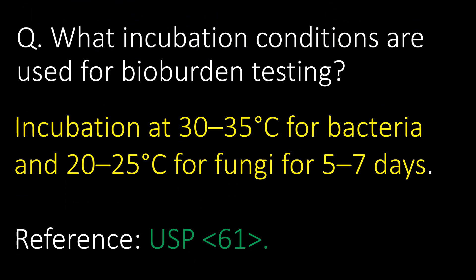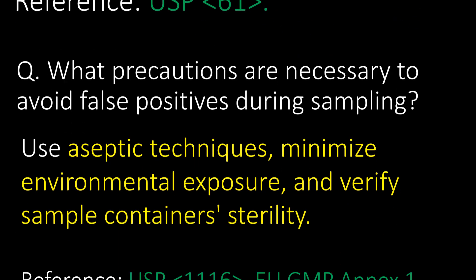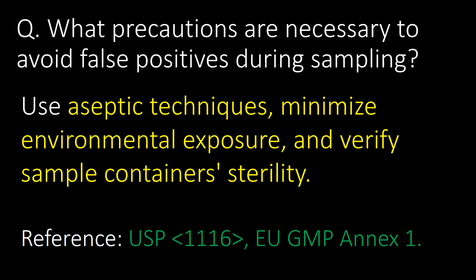What incubation conditions are used for bioburden testing? Incubation is at 30 to 35 degrees Celsius for bacteria and 20 to 25 degrees Celsius for fungi, for 5 to 7 days. Reference USP Chapter 61. What precautions are necessary to avoid false positives during sampling? Use aseptic techniques, minimize environmental exposure, and verify sample container sterility. Reference USP Chapter 1116 and EU GMP Annex 1.